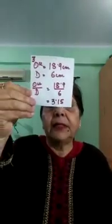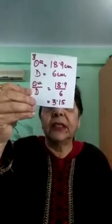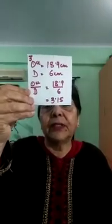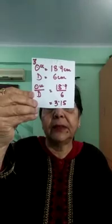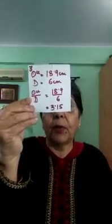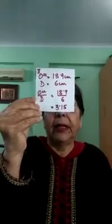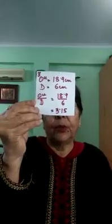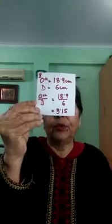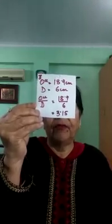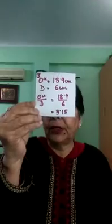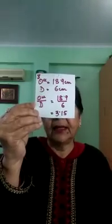Now let's come to the third circle. The third circle is red in color. The diameter is 6 centimeters and the circumference is 18.9 centimeters. Circumference upon diameter equals 18.9 upon 6, which comes out to be 3.15. No unit, as it is a ratio.